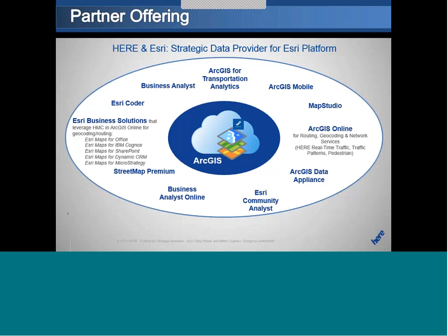So one of the things we'll focus on today is doing geocoding in ArcGIS Online. But I want to make the point that the HERE map content we'll be using today in ArcGIS Online is also the HERE map content you find throughout the entire ESRI platform. That is important to know because if you're doing geocoding in ArcGIS Online and want to use some of that data using StreetMap Premium, you want to make sure you're using the same base map so that the data lines up properly. We are an ESRI Platinum Partner, and HERE provides a lot of data for all their products.